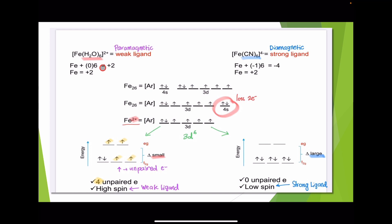Find the oxidation number for the iron in both complexes. Here, iron is +2 in both cases. Now do the electron configuration for iron. The orbital diagram for the iron atom with +2 oxidation state: positive 2 means it has lost 2 electrons, giving a 3d⁶ configuration.